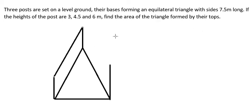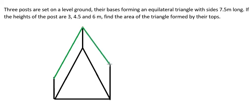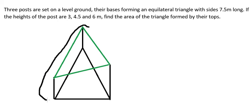We want to find the area of this triangle here, so I need to highlight it in green color. To do this, we need to know that the heights are different. For example, I'll select the posts with heights three and four-point-five.